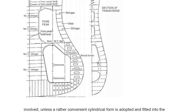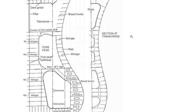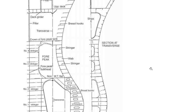To summarize, we covered: what a bulbous bow is and where it is located, its significance, wave-making resistance and how the bulb creates destructive interference waves, at what speeds it is effective, its disadvantages, why it was introduced in tankers and fuller-form vessels, and its constructional aspects. The panting and pounding arrangement will be covered in a separate video, which will complete the topic of bulbous bow. Thank you very much.